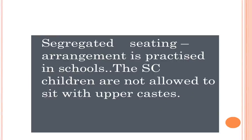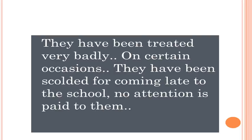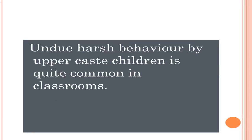Segregated sitting arrangement is practiced in schools — the scheduled caste children are not allowed to sit with upper caste children. They have been treated very badly; on certain occasions they have been scolded for coming late to school, and not much attention was paid to them. Undue harsh behavior by upper caste children is quite common in classrooms. They are excluded from participating in school functions and celebrations, and the upper caste didn't even allow them to participate in morning assemblies.